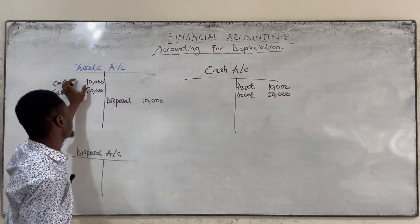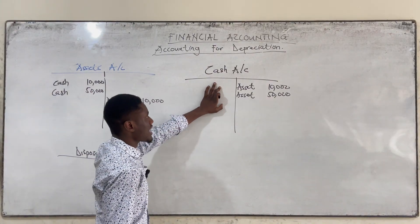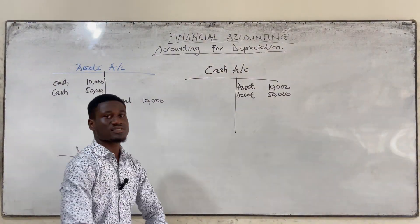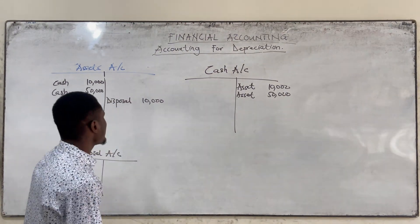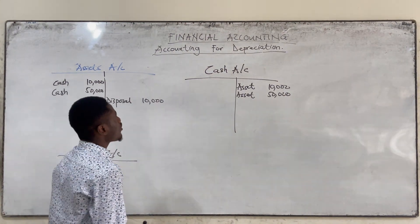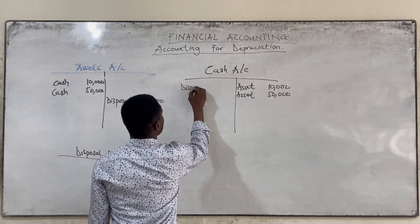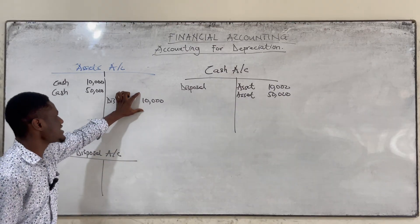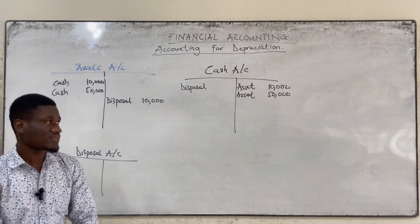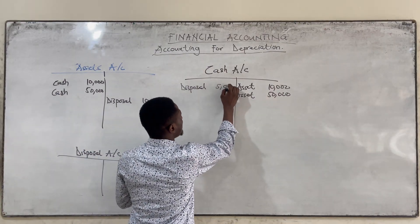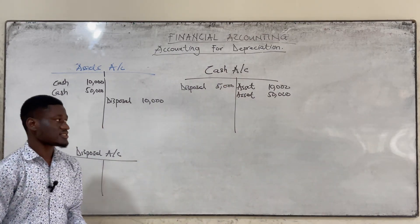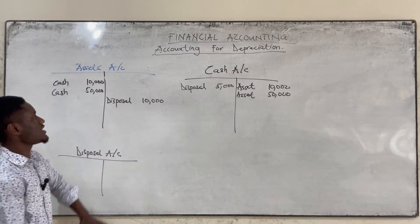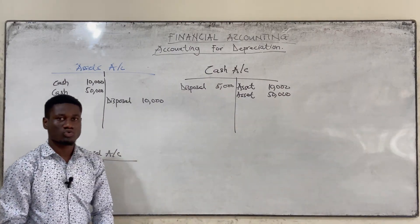Our cash is increasing, therefore we have to debit. When we are debiting for cash, we are going to write the actual amount we sold the asset for. So this 10,000 asset was sold for 5,000 — we are going to record that actual selling amount. Here will contain the cost of the asset sold, and here will contain the actual amount we sold the asset for.